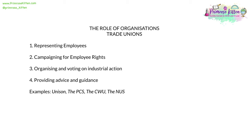Trade unions also have several roles. They represent employees in the workplace at things like tribunals and formal meetings. They campaign for employee rights within the industry. They organise and vote on the appropriateness of industrial action, such as strikes. And they provide advice and guidance to their members. Examples include Unison, the PCS (the Union for the Civil Service), the CWU (the Communication Workers Union), and the National Union of Students.